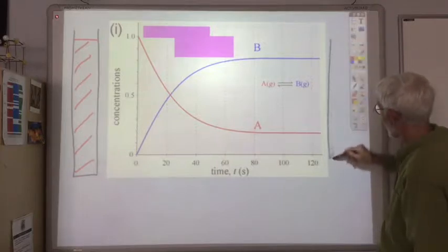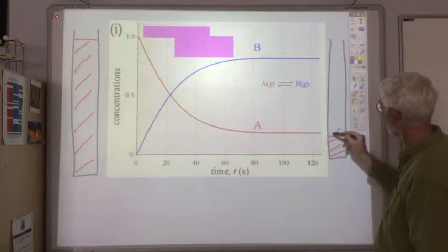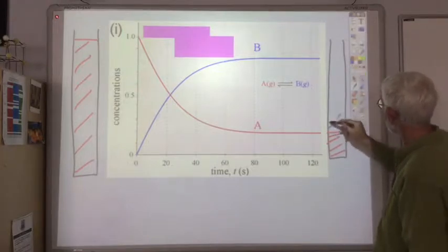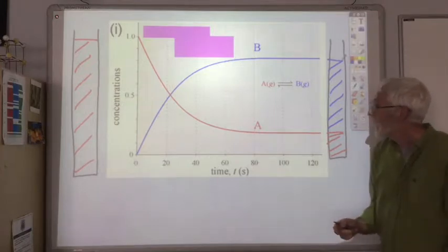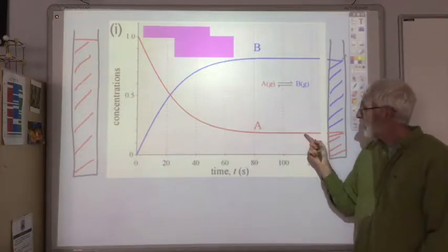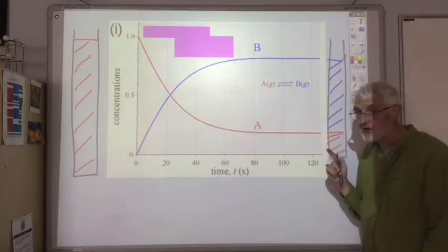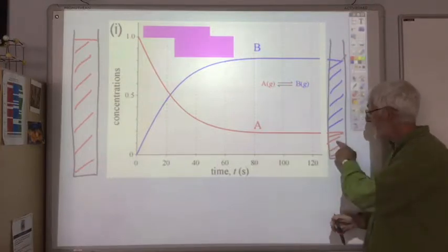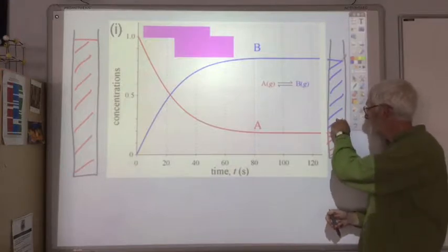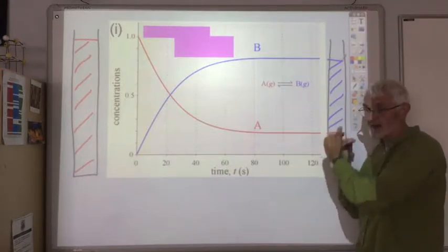In which, we've still got some A left. Then we've got lots of B. And no matter how long we leave it now, this is not going to change. The amount of A and the amount of B is going to stay the same. A is still turning into B. B is still breaking down to give you A, but at the same rate.